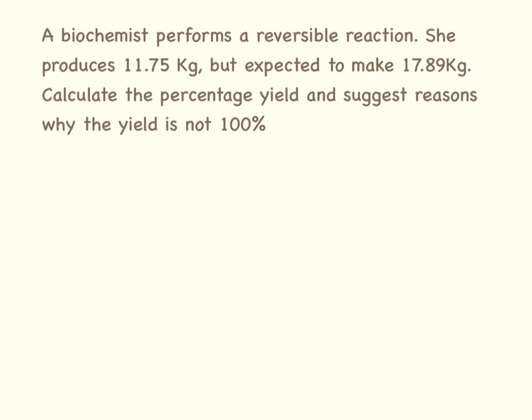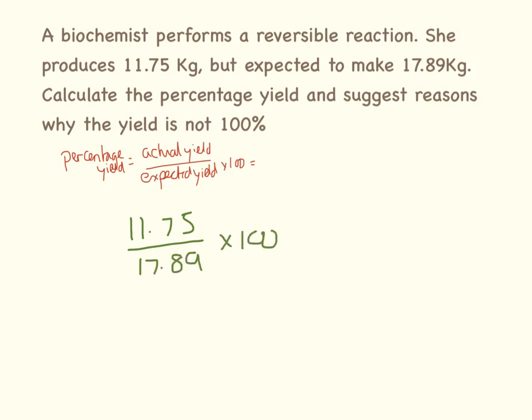A biochemist performs a reversible reaction. She produces 11.75 kilograms but expected to make 17.89 kilograms. Calculate the percentage yield and suggest reasons why the yield is not 100%. Our actual yield was 11.75, our expected yield was 17.89, then we times that by 100. So 11.75 divided by 17.89 equals times 100 equals 65.68%.